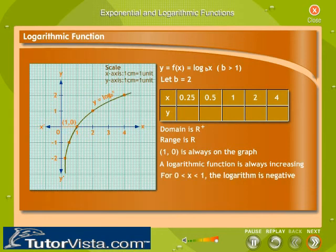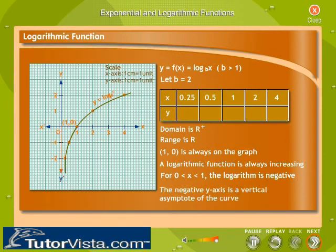When x is between 0 and 1, the logarithm is negative. When x is very near to 0, y is a very small negative number. The negative y-axis is a vertical asymptote of the curve.